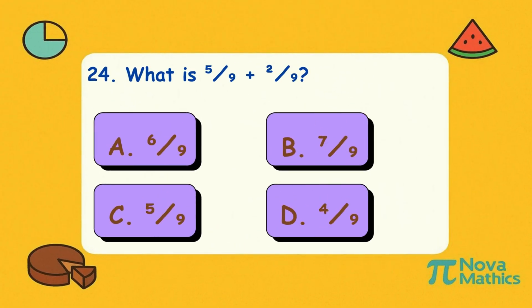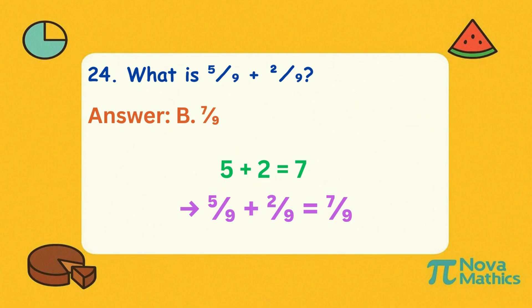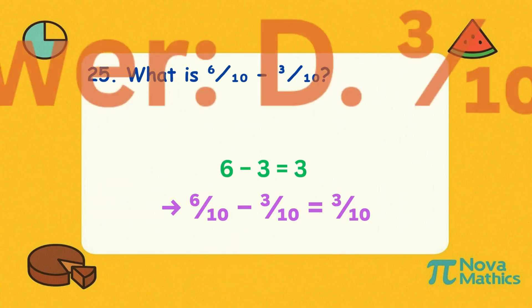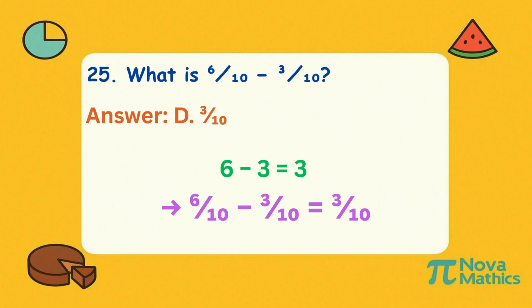Twenty-four. What is five-ninths plus two-ninths? Five plus two makes seven on top. The bottom stays nine. Twenty-five. What is six-tenths minus three-tenths? Six minus three gives three. Keep the bottom number. That's three-tenths.